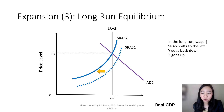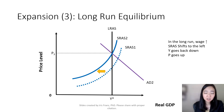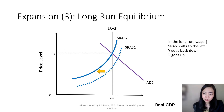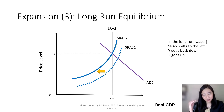In the long run, the short-run aggregate supply curve is going to shift to the left, restoring our real GDP back to its potential with a higher price level.